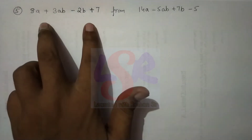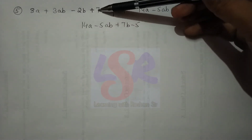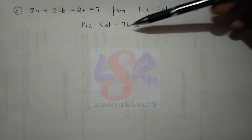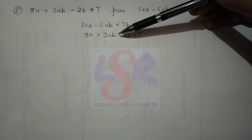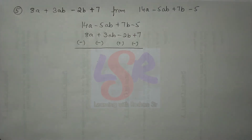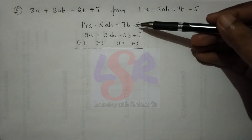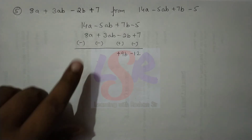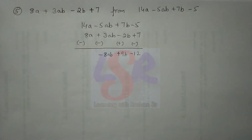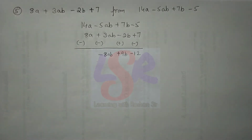In question 5, we subtract one expression from another. We write the first expression, then copy the second with like terms aligned beneath. We change the sign of all terms in the second expression and then solve as addition: same signs are added — 5 and 7 are added, 7 and 2 are added, minus 5 and minus 3 are added. Where signs differ, we subtract: 14 minus 8 equals 6.